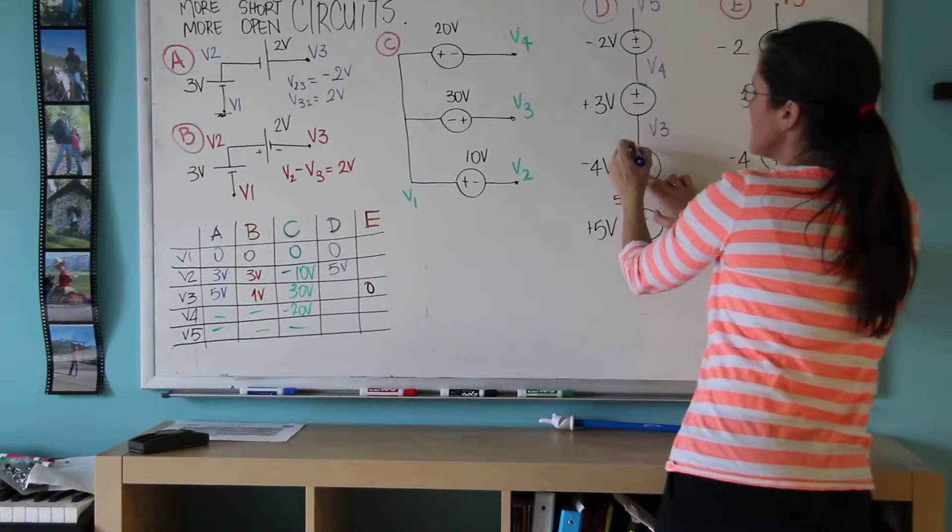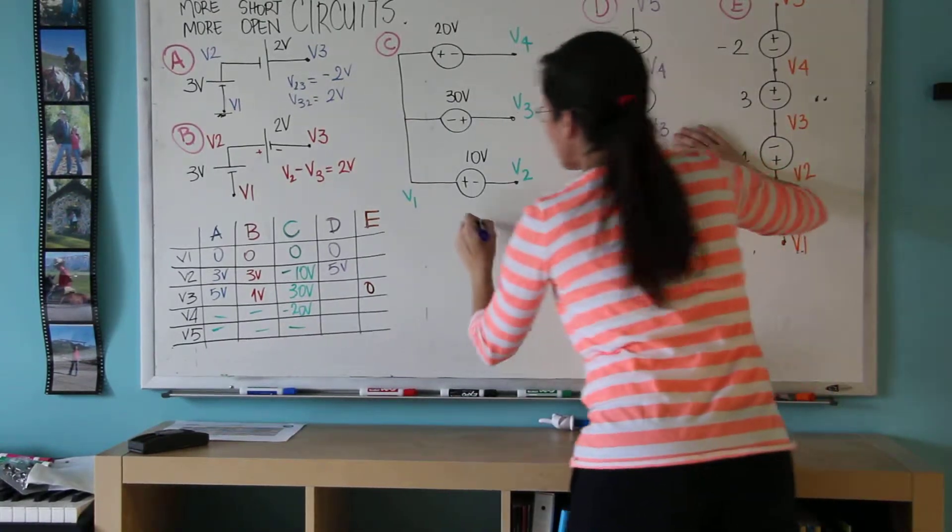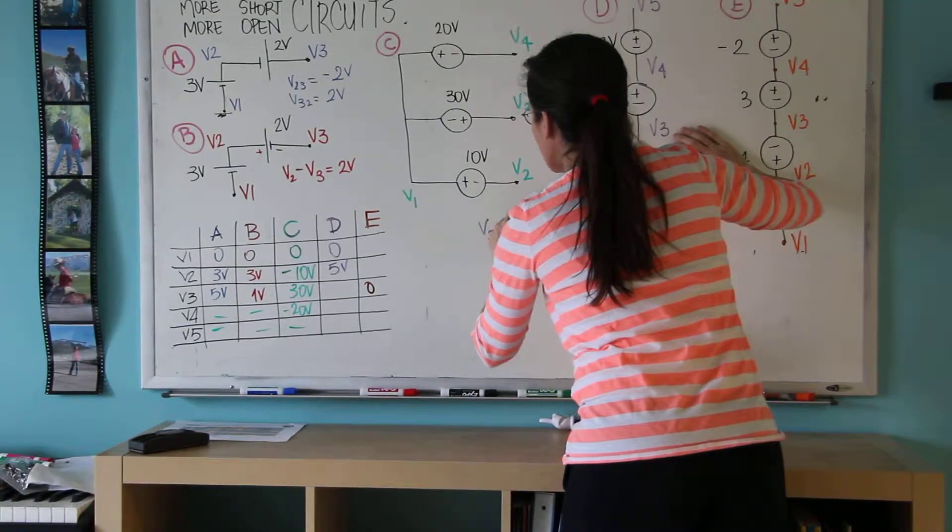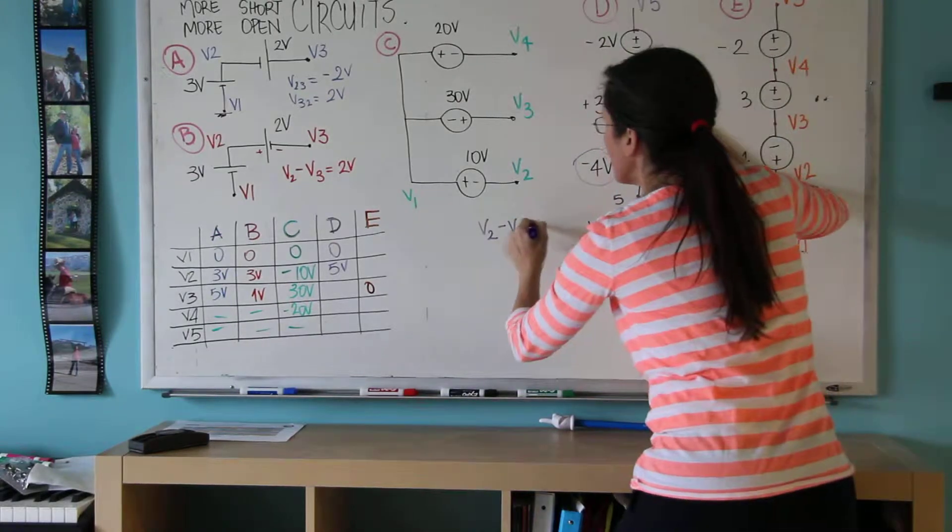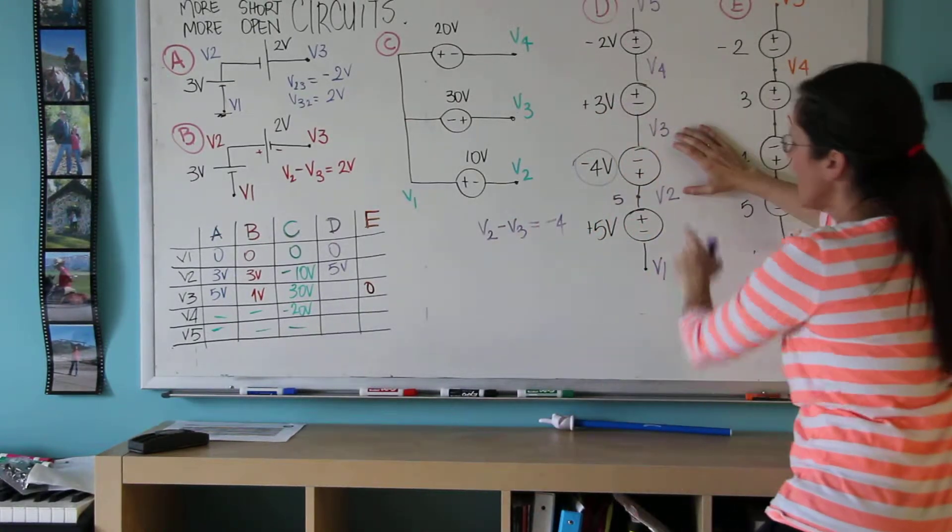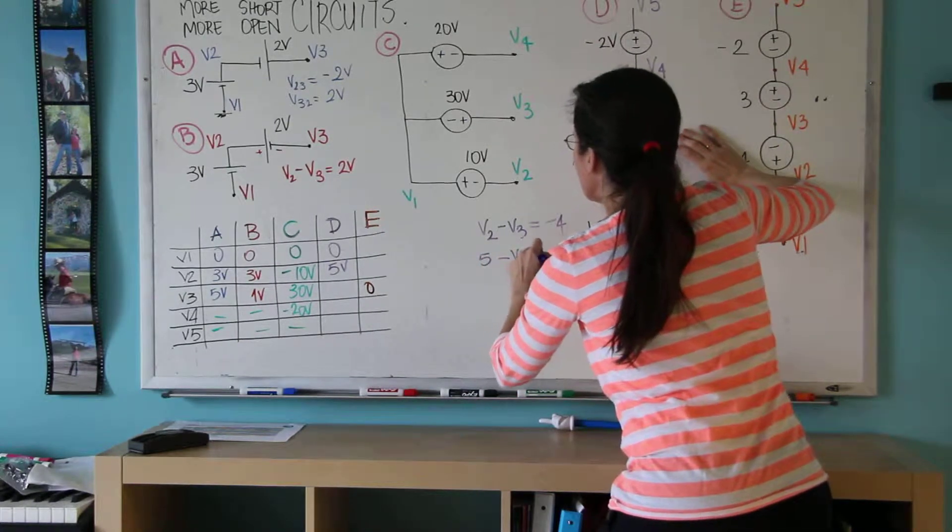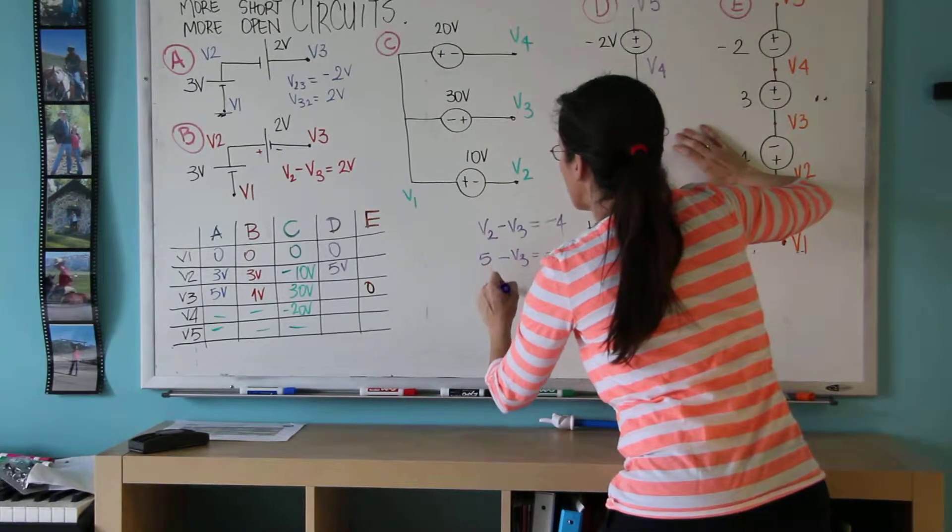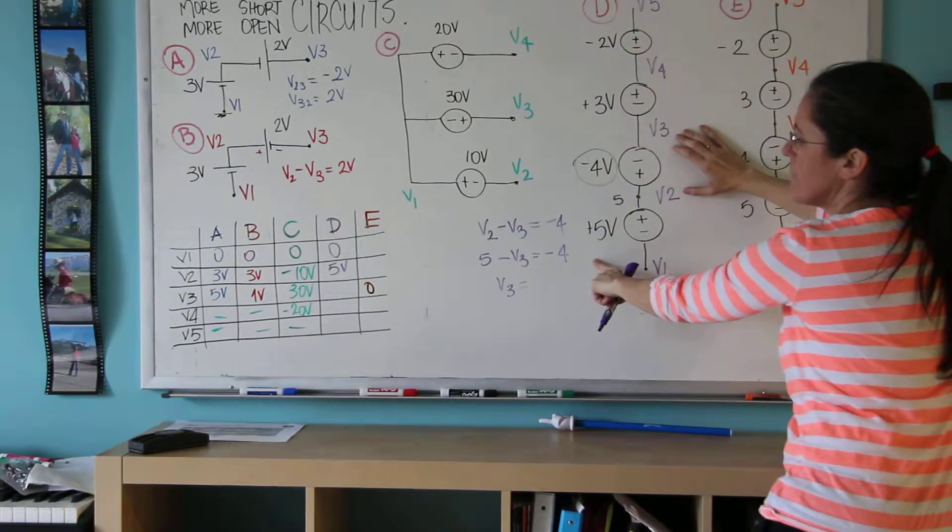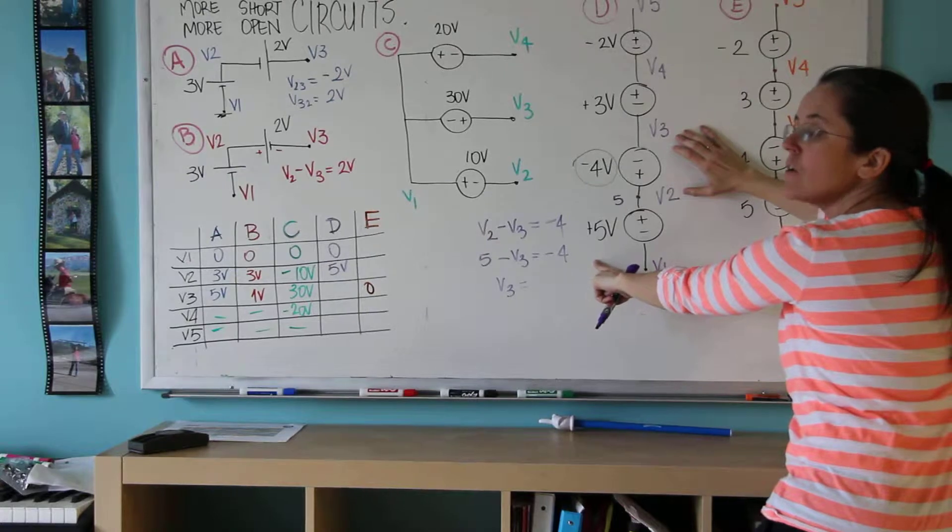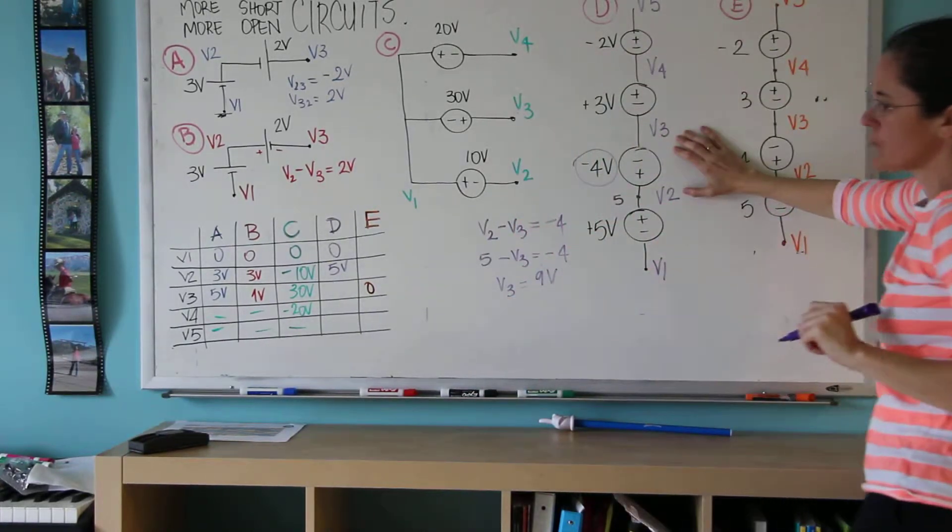And this is going to be V2 minus V3. It's going to be whatever number the problem gave me, which is minus 4. And now I know V2, which is 5 minus V3 equals minus 4. And therefore, V3 equals minus 4 minus 5, which is minus 9. And therefore, V3 equals 9 volts.